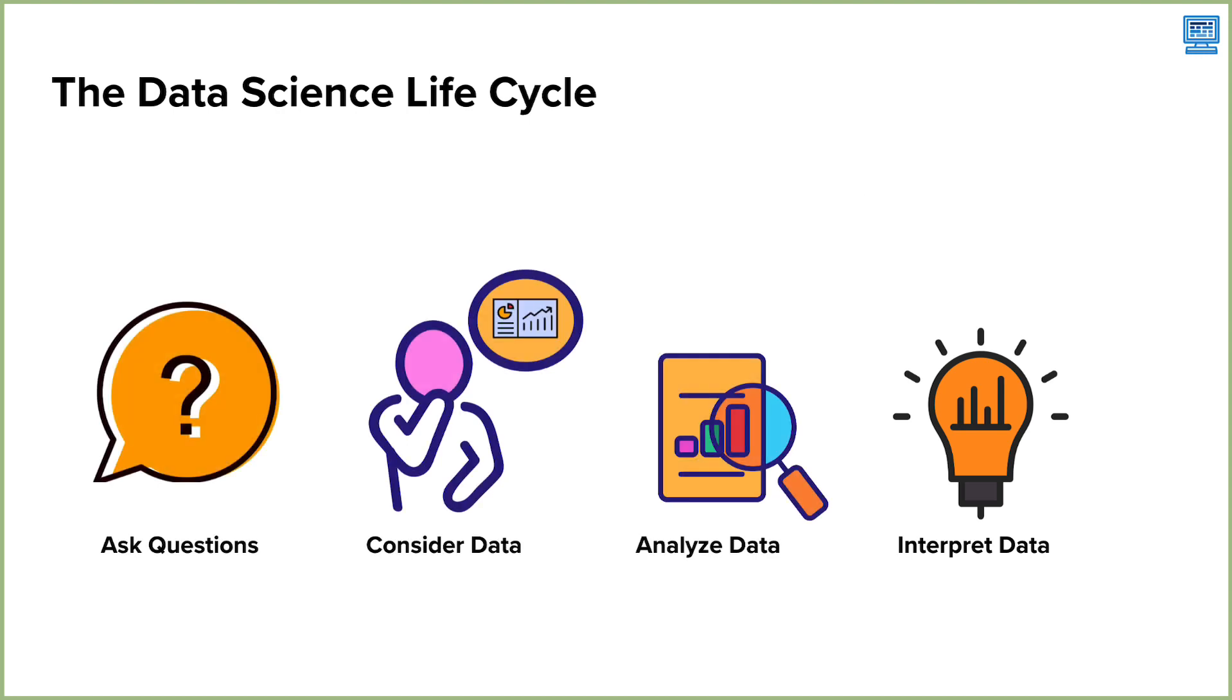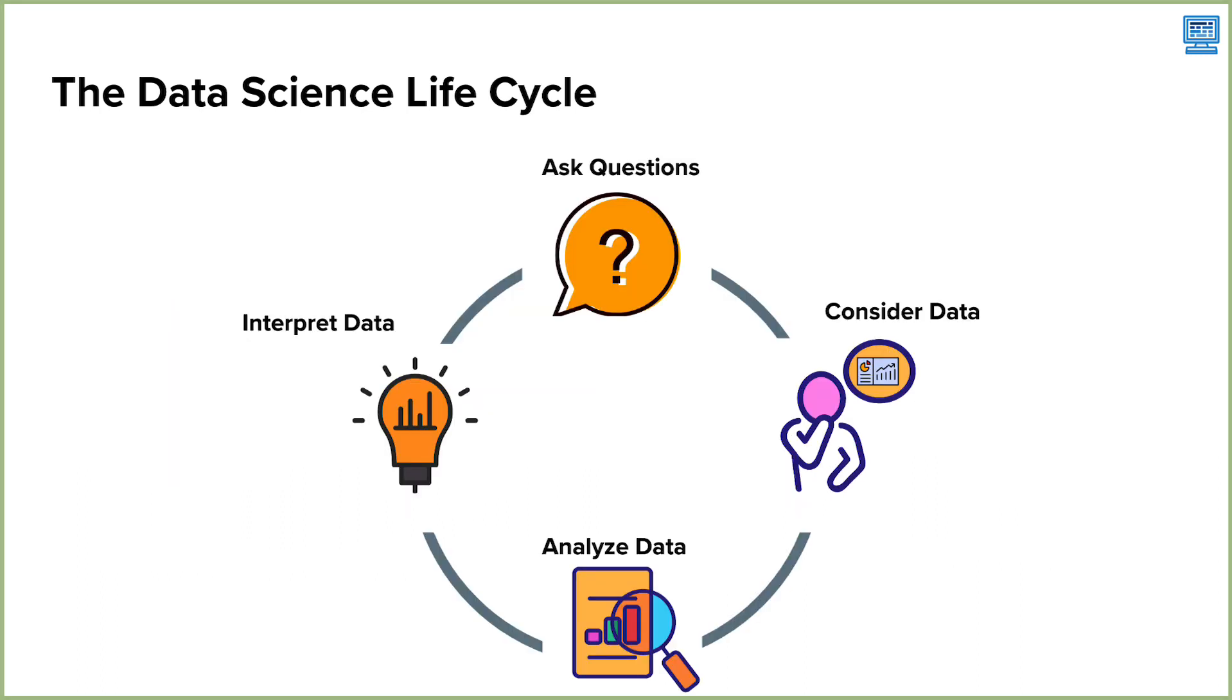Together, these four steps make up the data science life cycle that we'll be using in this course. It's called a cycle because the steps can and usually are revisited many times throughout the process. Let's now take a look at an example.